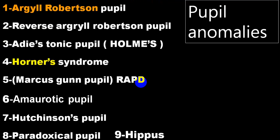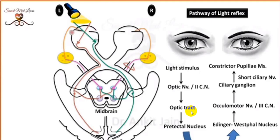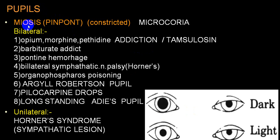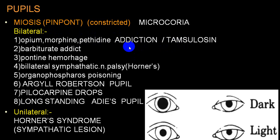Miosis (also called pinpoint pupil, constricted pupil, or microcoria): the classical example of bilateral miotic/microcoric pupil is in opium, morphine, or pethidine addiction or toxicity. Other causes include tamsulosin, barbiturate addiction, and pontine hemorrhage — a massive hemorrhage in the pons can produce bilateral pinpoint pupil. Organophosphorus poisoning will be bilateral. Pilocarpine drops will make both pupils pinpoint bilaterally.